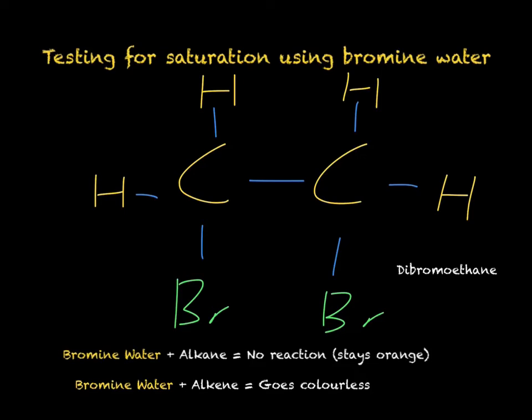This addition of a halogen can also be done with chlorine, Cl2, forming dichloroethane, or it can also be done with fluorine or iodine. Adding something across a double bond is known as an addition reaction.